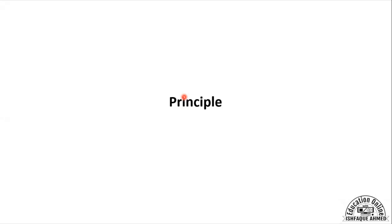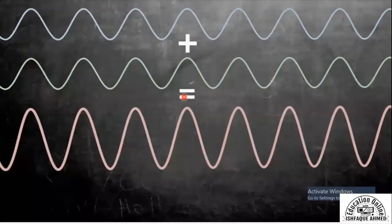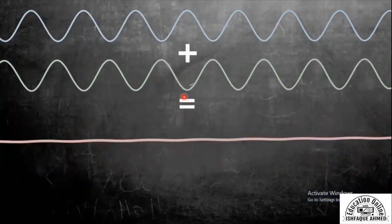As I mentioned in the definition, the basic principle of the interferometer is to measure the wavelength of light through the principle of interference. In interference, we know that two waves come together, and either a stronger wave or a weaker wave is produced.